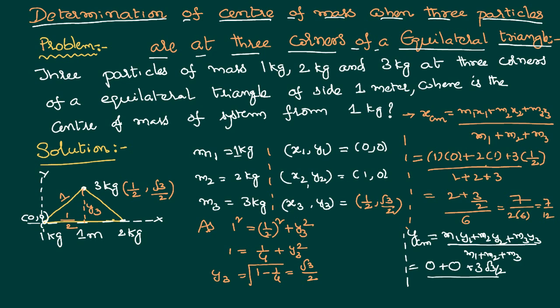By M1 plus M2 plus M3 is 6, so it is going to be how much: 3 can be cancelled with 6 with 2, therefore it is going to be equal to root 3 divided by 4. So the coordinates of the center of mass will be having x component 7 by 12 and y component root 3 divided by 4.